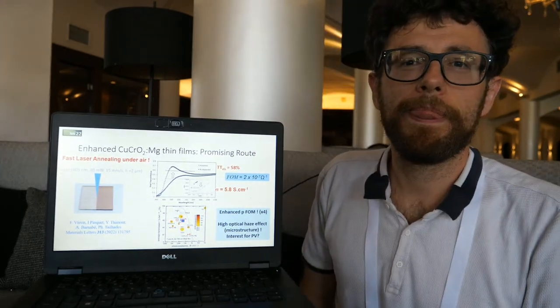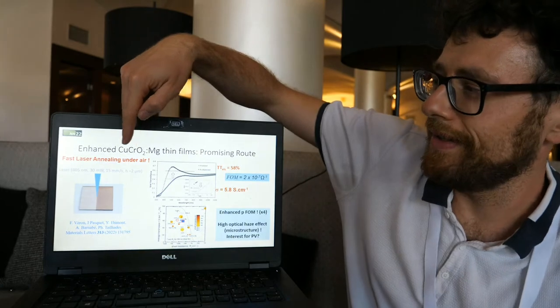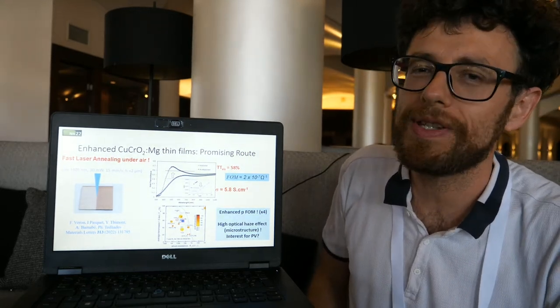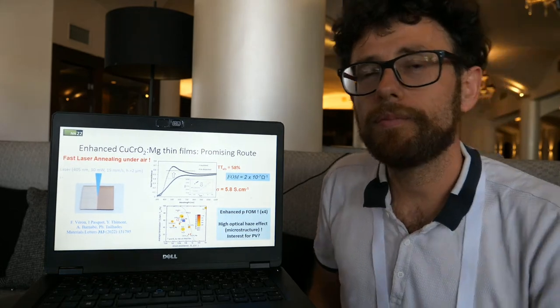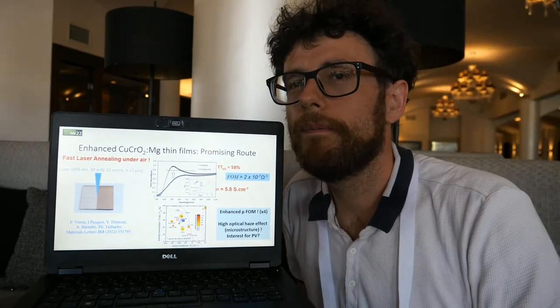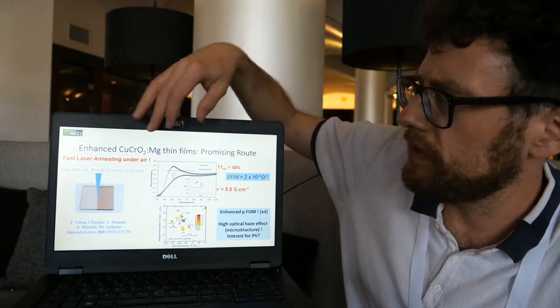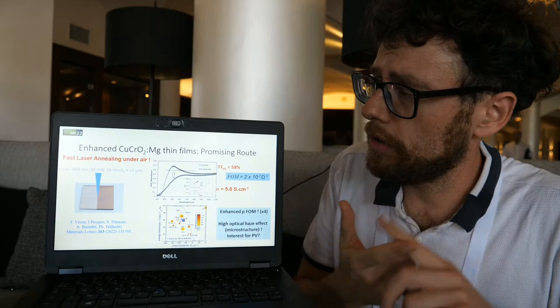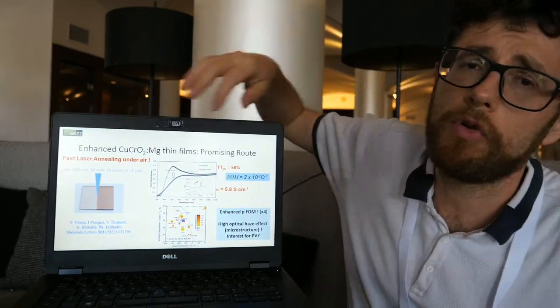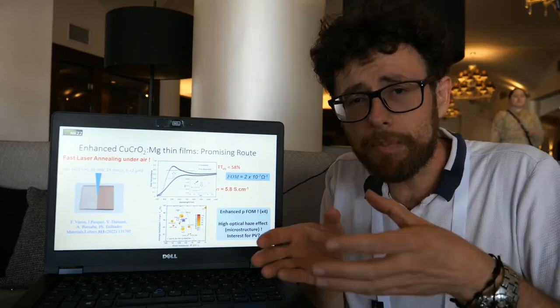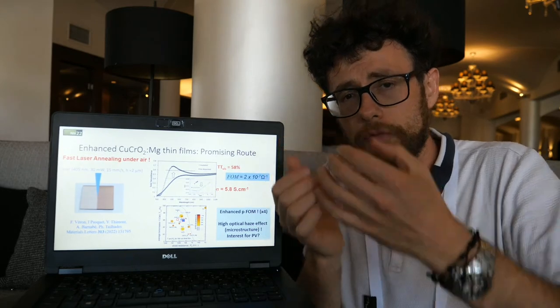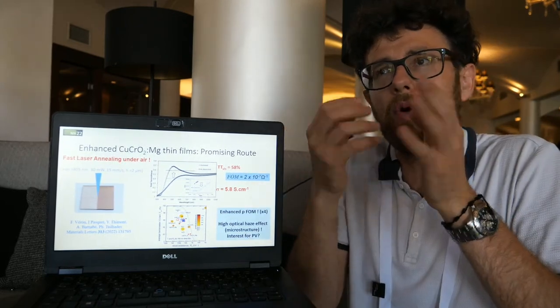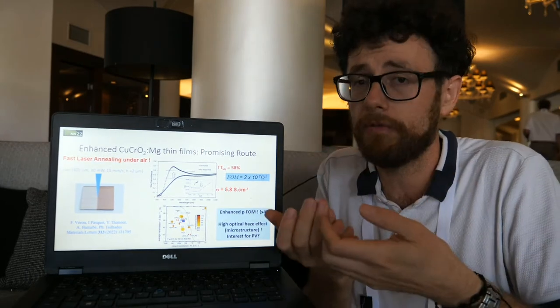So you call it the CuCrO2? This one? It is delafossite. Delafossite is copper chromium oxide. And is it broadly available? It is pretty easy to deposit. We can prepare with mixture of oxide, for example chromium oxide, copper oxide and also magnesium oxide for the doping. It is pretty easy to prepare a target. After that, from the target we obtain a lot of thin film. The preparation of target is long but when we obtain this target, we can make a lot of thin films with this target.